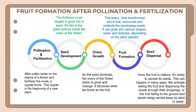After the ovary grows and becomes fruit, this is called fruit formation. The ovary transforms into a fruit, surrounding and protecting the developing seed. It can grow into various shapes, sizes, and textures depending on the plant species. Once the fruit is mature, it is ready to spread its seeds. This can happen in many ways, like animals eating the fruit and dispersing the seeds through their droppings, or the fruit falling to the ground and seeds being carried away by wind or water.